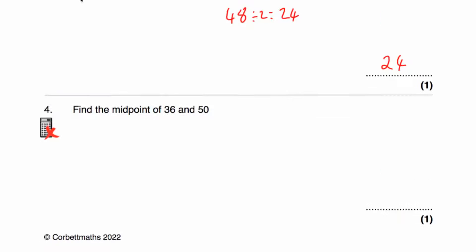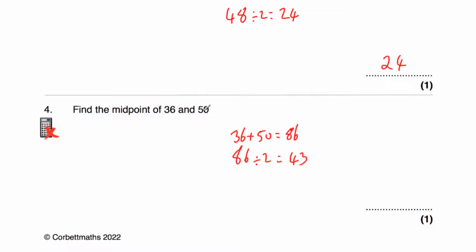Question four says: find the midpoint of 36 and 50. So 36 plus 50 is equal to 86, and then 86 divided by 2 is equal to 43. So the midpoint of 36 and 50 is 43.